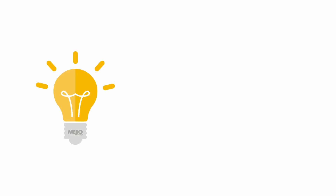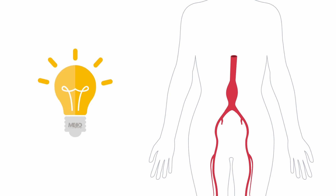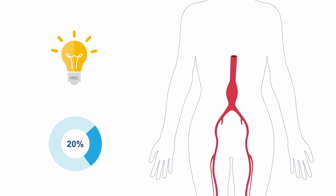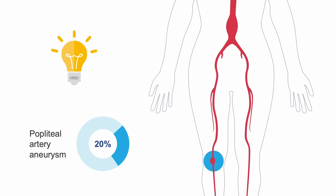Pro tip: when a patient has an abdominal aortic aneurysm, there is a 20% chance they will also have an aneurysm in the popliteal artery behind the knee. Oftentimes, popliteal artery aneurysms occur bilaterally.